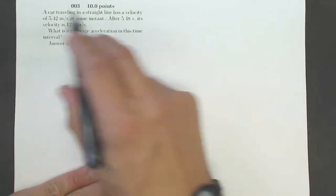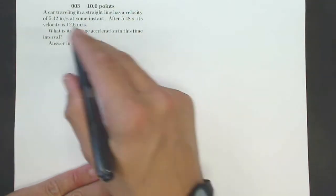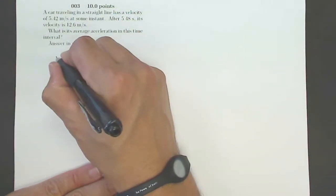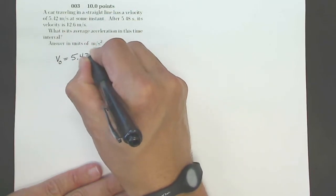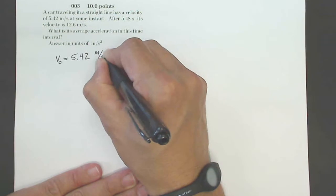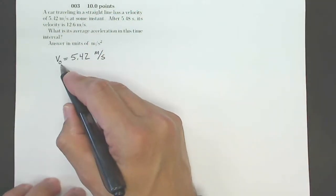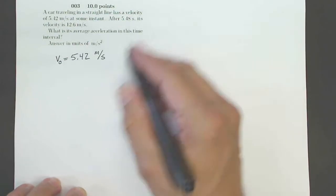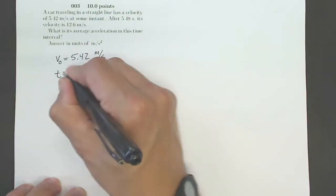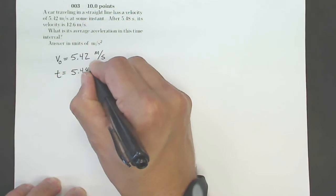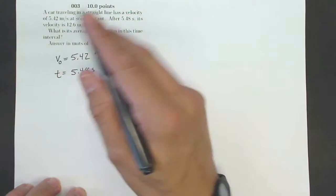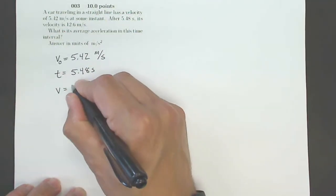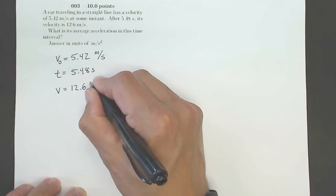Well, let me write down what I know. A car traveling in a straight line has a velocity of 5.42 meters per second. That is going to be my initial velocity, so V0 equals 5.42 meters per second. I use V0 for my first velocity. After 5.48 seconds, that's a time, equals 5.48 seconds. Its velocity is 12.6 meters per second. That's a new velocity, so V equals 12.6 meters per second.